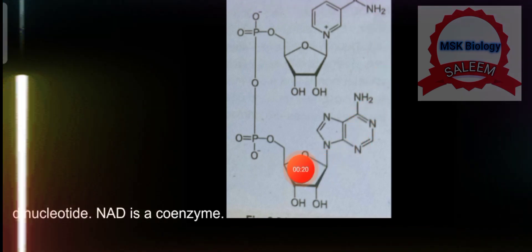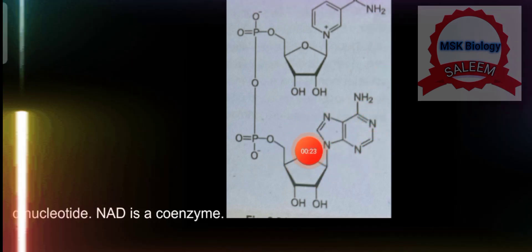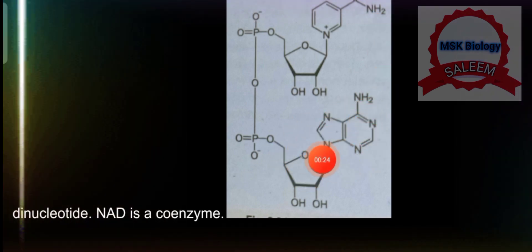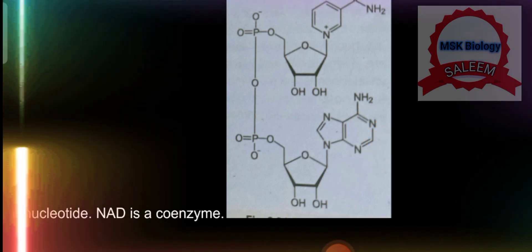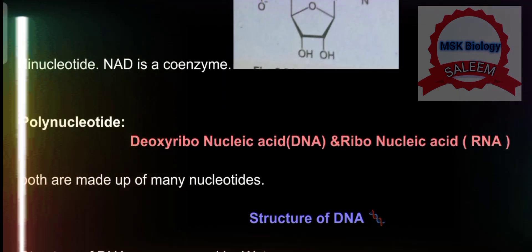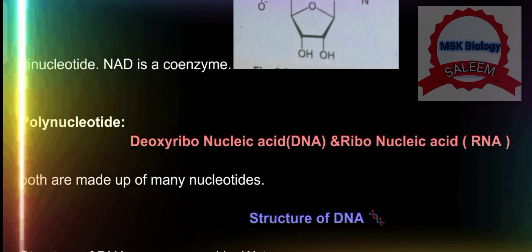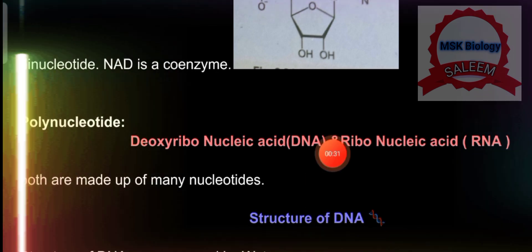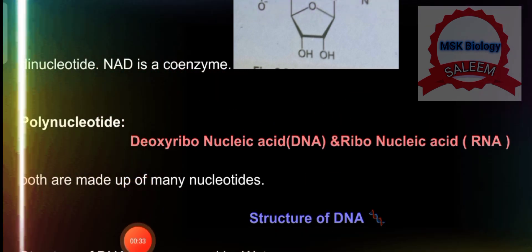Is tarah say, ek nucleotide ke saath nicotinamide aur dooseri nucleotide ke saath adenine — yeh nitrogenous base hai. Yeh NAD ki structure hai. Nicotinamide adenine dinucleotide — that is a coenzyme.